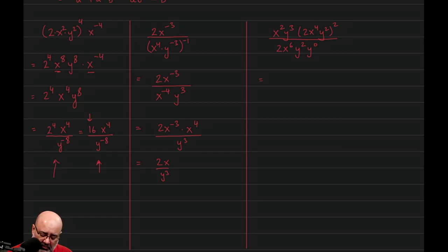So I will rewrite this problem as x squared y cubed times 2x to the 4y squared squared over 2x to the 6y squared. Because when this turns to 1, 1 times anything is always itself. So it doesn't really change anything. So that's me not using a property. It's just me saying anything to the power of 0 besides 0 is 1.